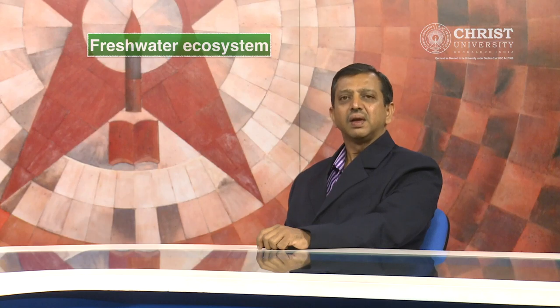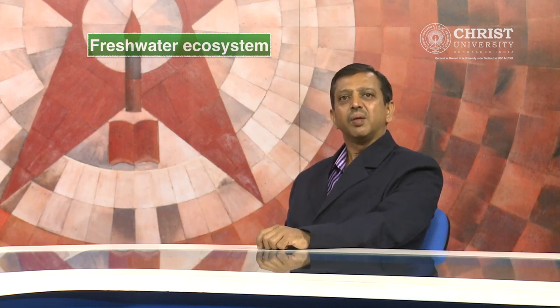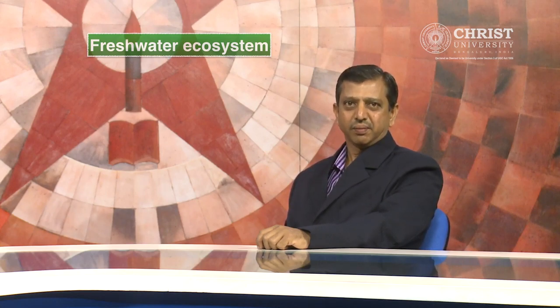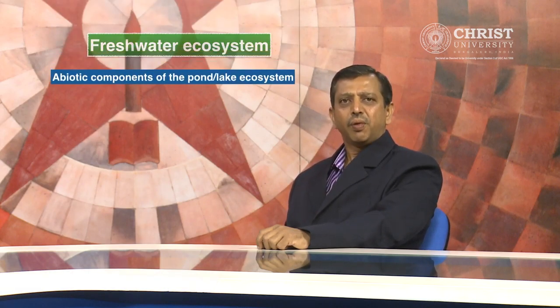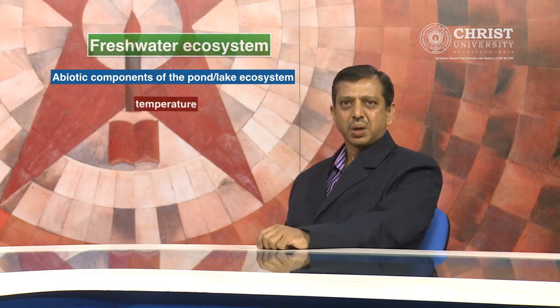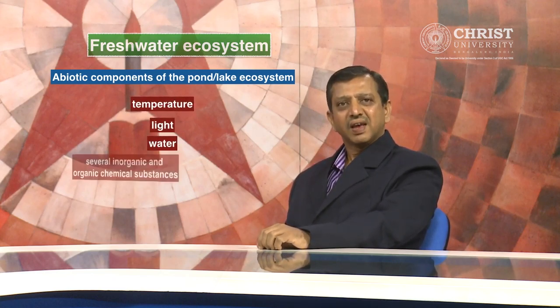Location, size, depth and substratum of a pond or lake constitute the biology of the ecosystem. The abiotic components of the pond or lake ecosystem are temperature, light, water and several inorganic and organic chemical substances.